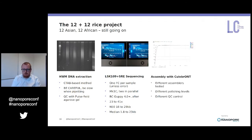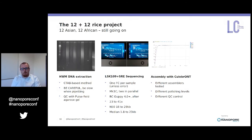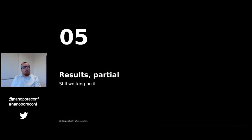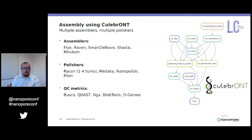We assemble those data with different tools using our pipeline Coolerbands, which allows you to parallelize many assemblies at the same time. We test different assemblers, different polishers, and different QC controls, and finally we scaffold the contigs into chromosomes, transfer the annotation, and identify variation.